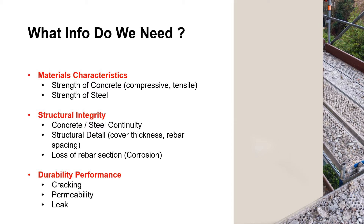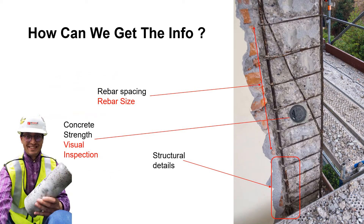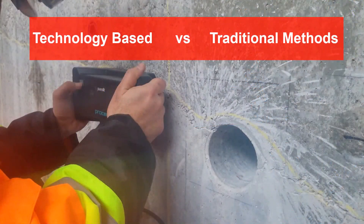Traditionally, we used to go to the job site with our core drilling machine and hammer drills to chip out some concrete and expose a steel rebar. We then measured the bar diameter, rebar spacing, and evaluated their condition. We also took some cores from the concrete and perhaps cut some rebars in the process. However, there are certain occasions where we no longer have that luxury.